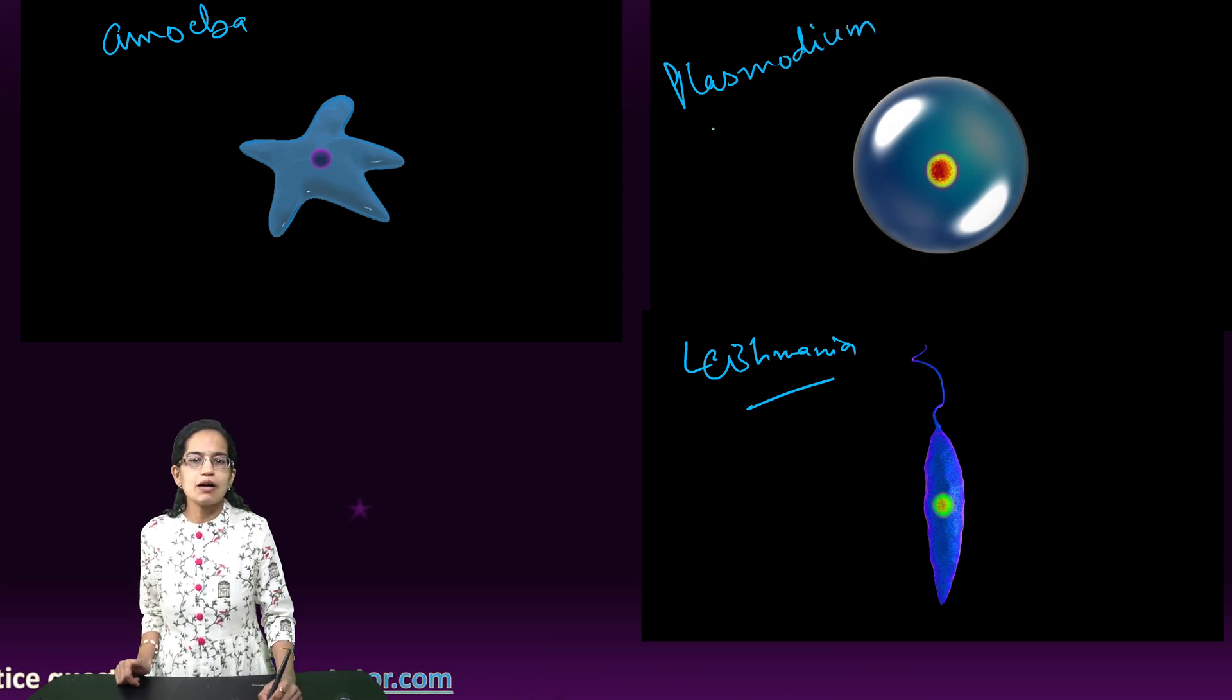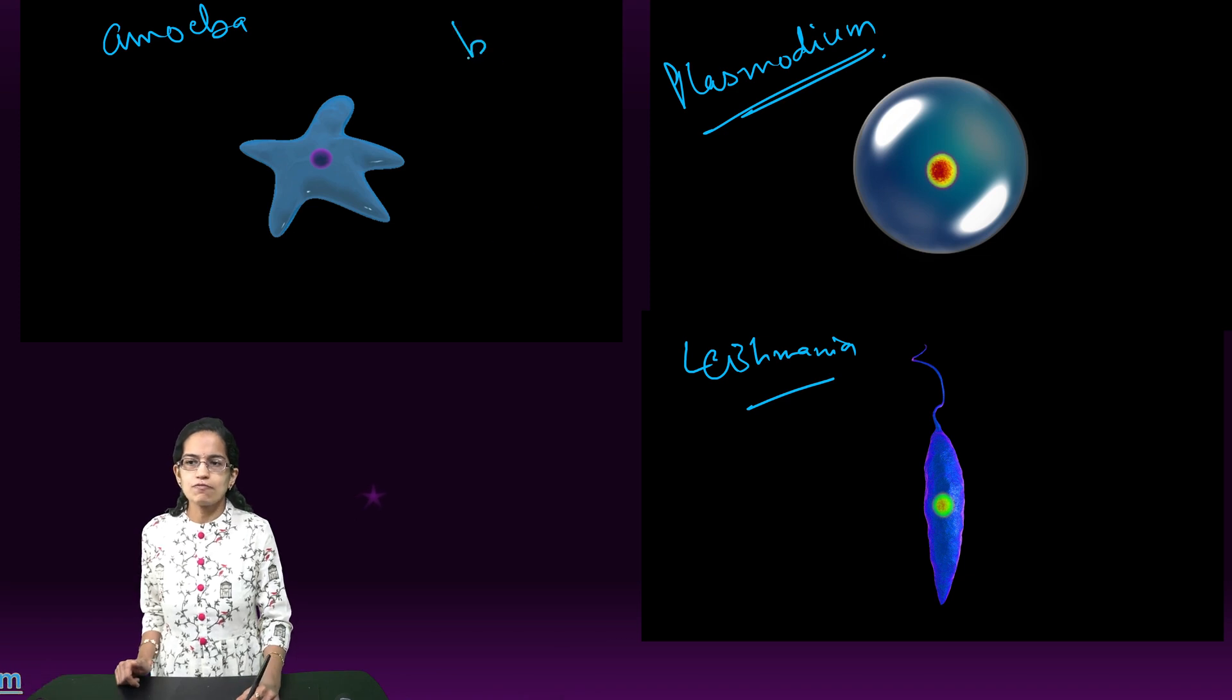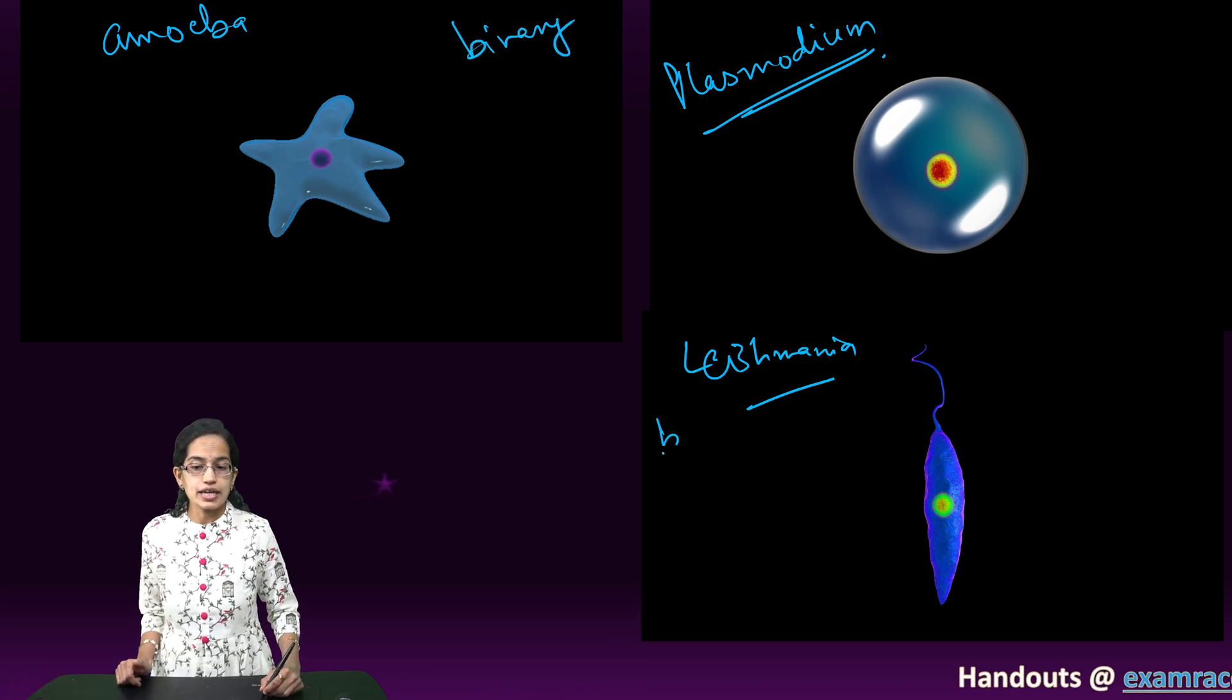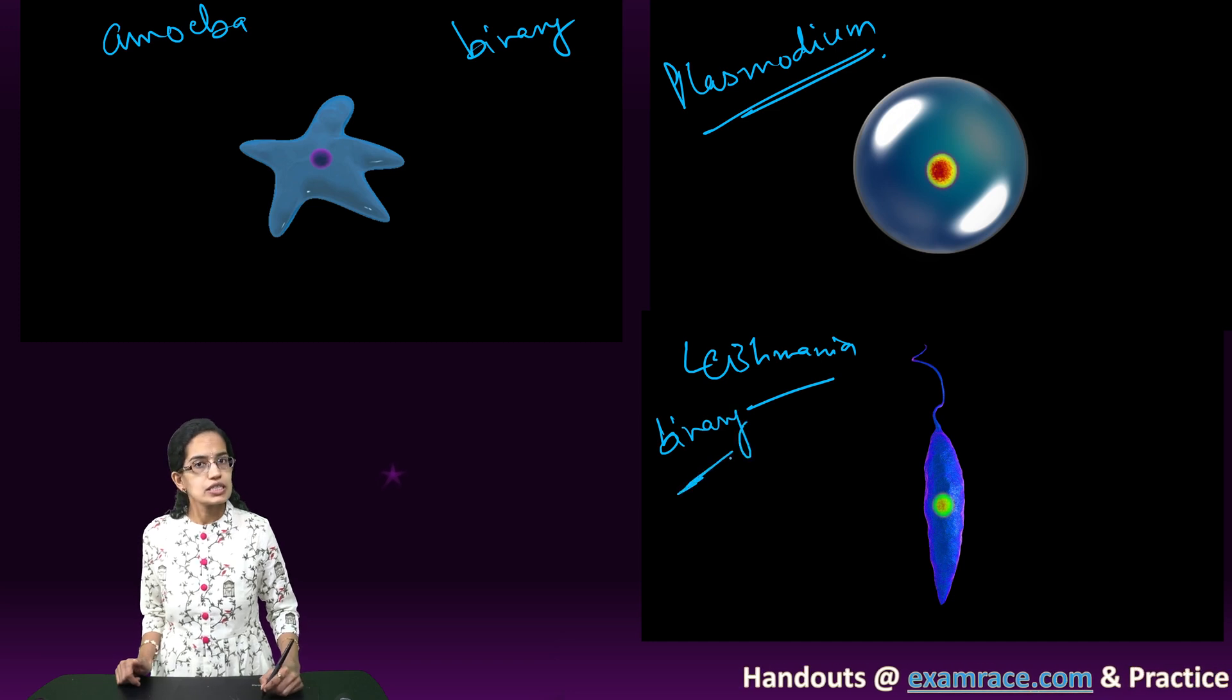Now plasmodium is an example of multiple fission. Amoeba is an example of binary fission, and then we have leishmania, again an example of binary fission in a single plane.